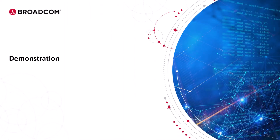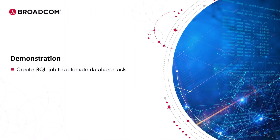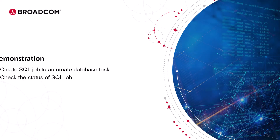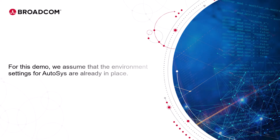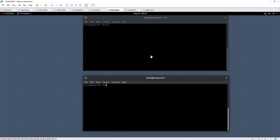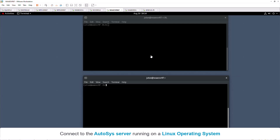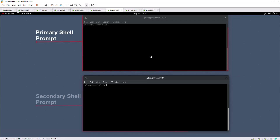Let's enter our training environment and create a SQL job to automatically fetch the machine and agent names from the database and store them in an output file. We will also monitor the events log of the SQL job run using the Autosyslog command. For this demo, we will assume that the environment settings for Autosys are already in place.